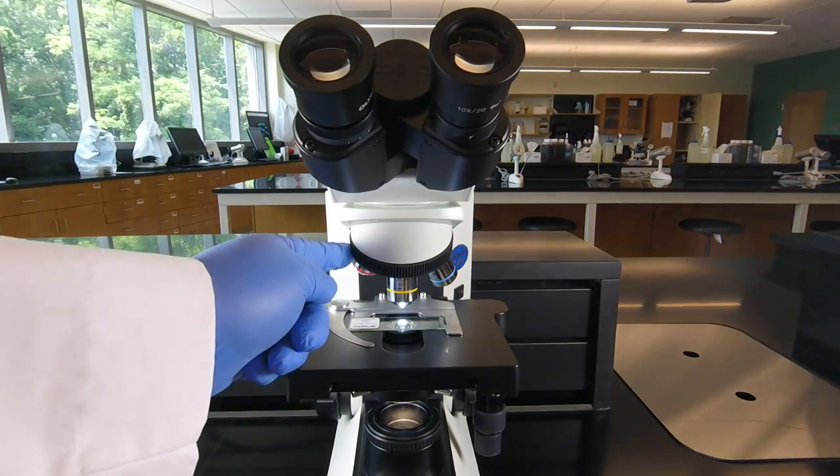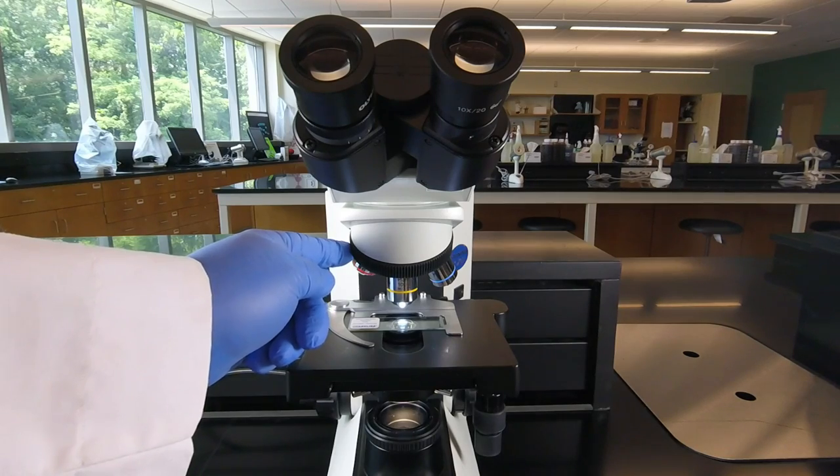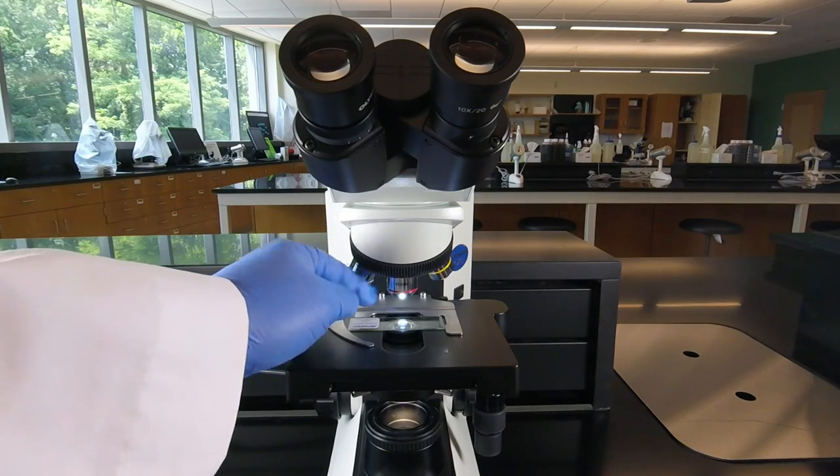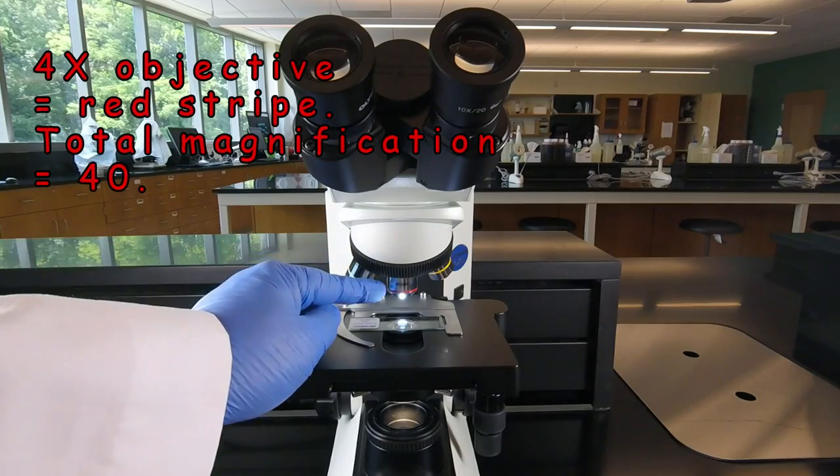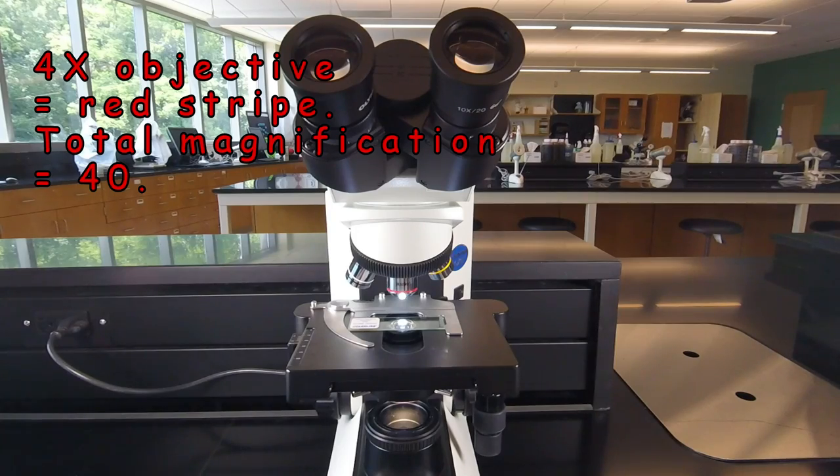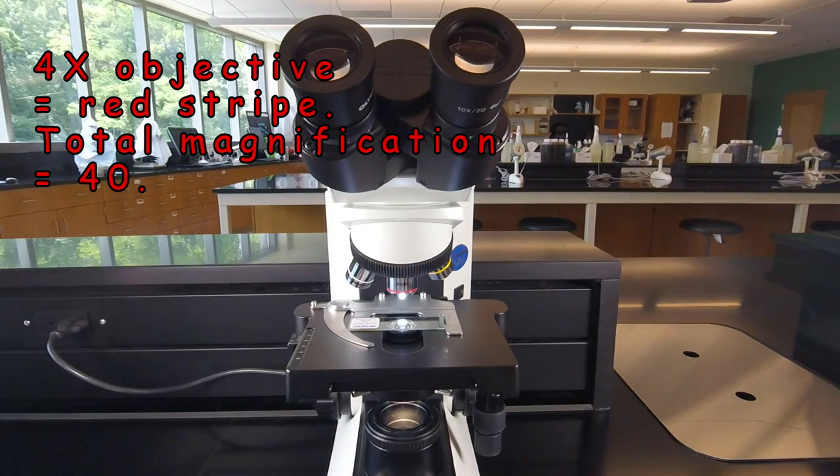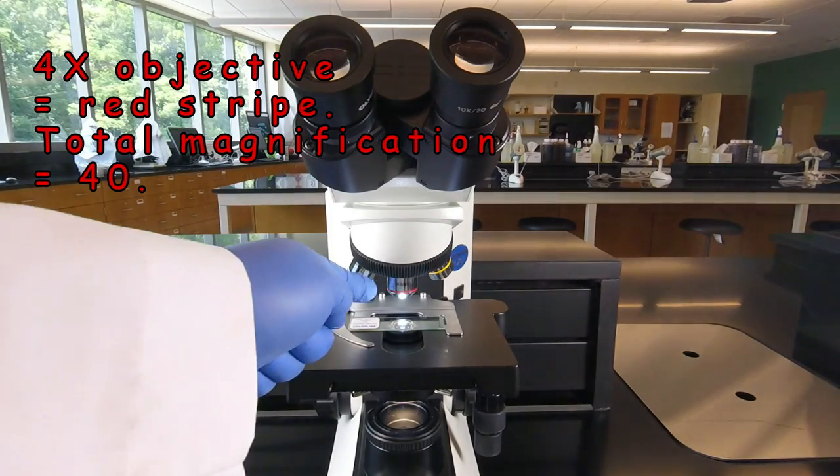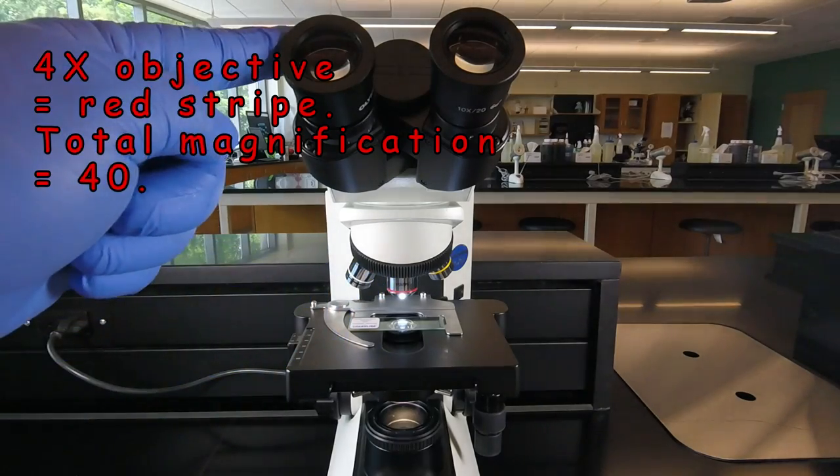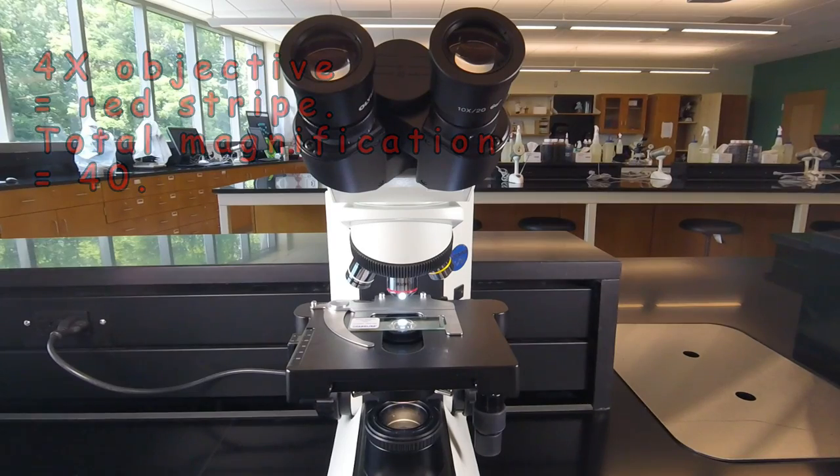But then on a turret down here, we have a number of different objective lenses. Most of the microscopes have a red striped lens. That's a 4x lens or a four magnification lens. Now the product of the two lenses gives us the total magnification. So if we're using the 4x lens, which we won't use because the magnification is too small for this class, it would be 4 of the objective lens times 10 of the eyepiece. We'd be seeing the image 40 times its normal size.